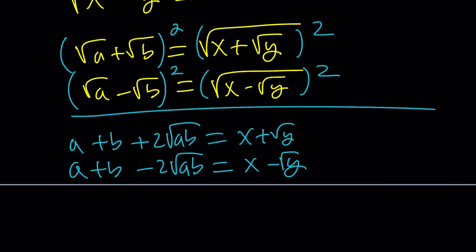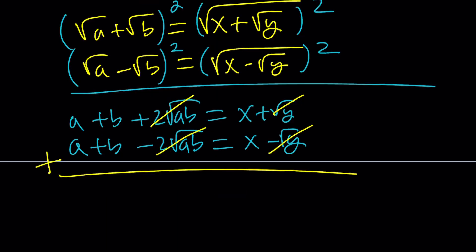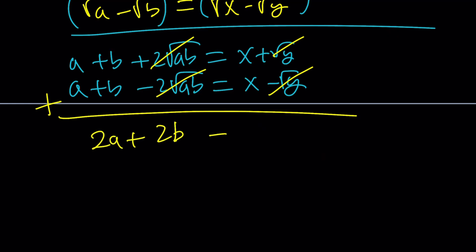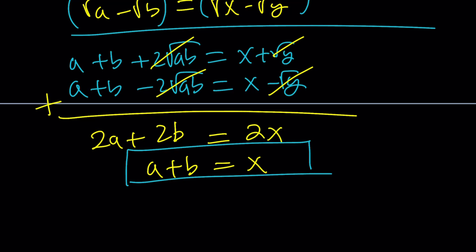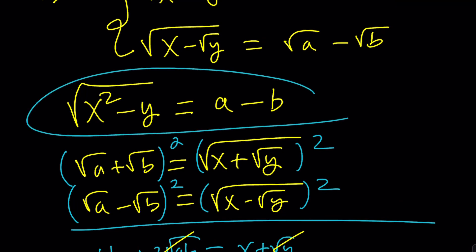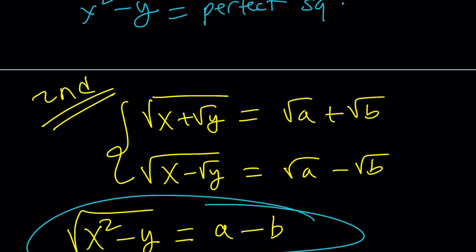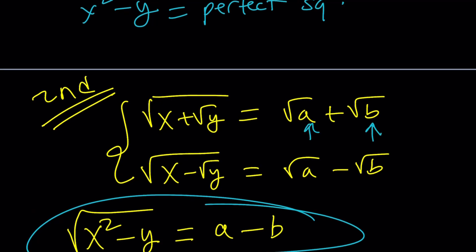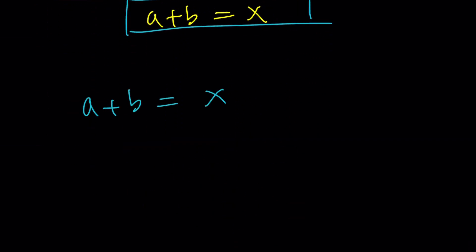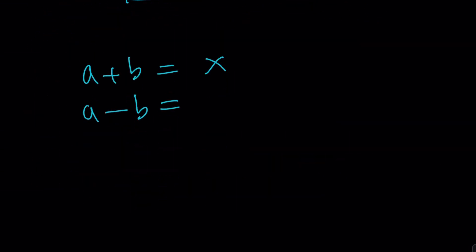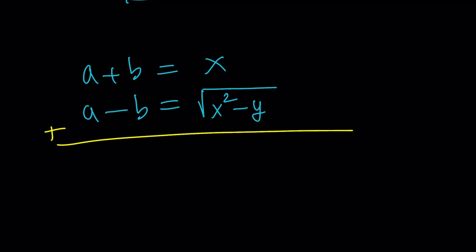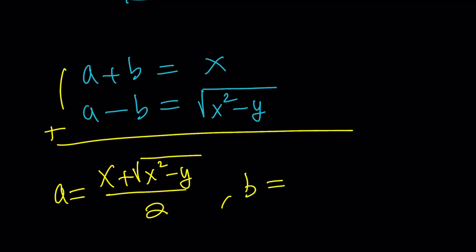Squaring both sides gives us: from the first, a plus b plus 2 times root ab equals x plus root y; from the second, a plus b minus 2 times root ab equals x minus root y. Adding these equations, the root ab terms cancel, giving 2a plus 2b equals 2x, so a plus b equals x. We also know a minus b equals the square root of x squared minus y. Solving this system by adding and dividing by 2: a equals x plus the square root of x squared minus y divided by 2, and b equals x minus the square root of x squared minus y divided by 2.